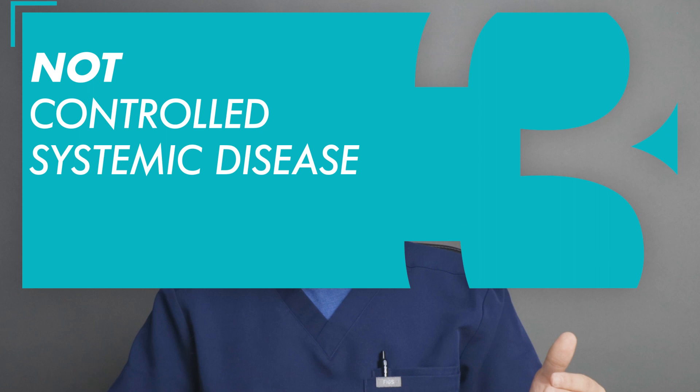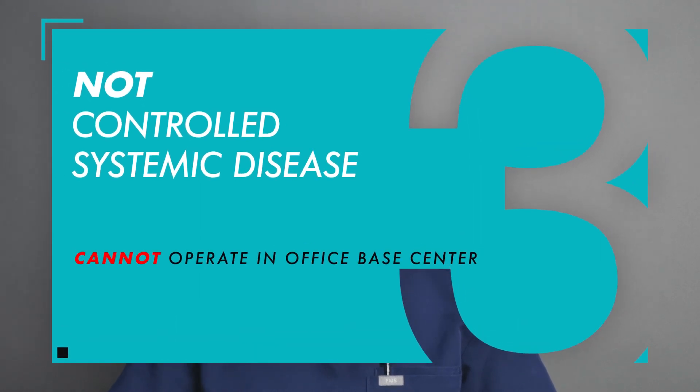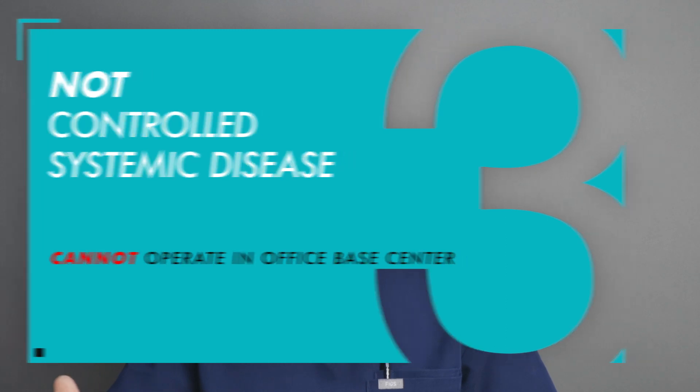An ASA 3 patient has an uncontrolled systemic disease — for example, heart disease, hypertension that is not well controlled, or diabetes that is not well controlled. We are not allowed to perform procedures in office settings on patients who are ASA 3.